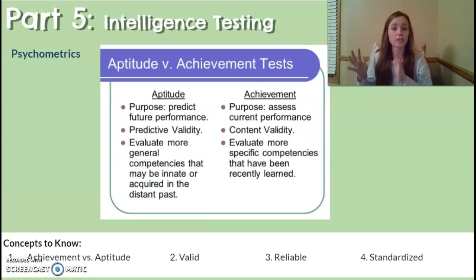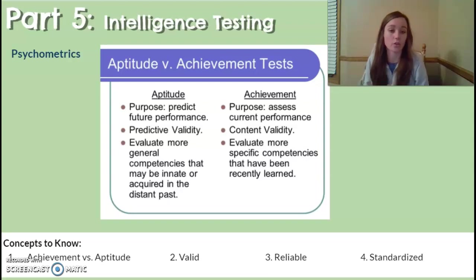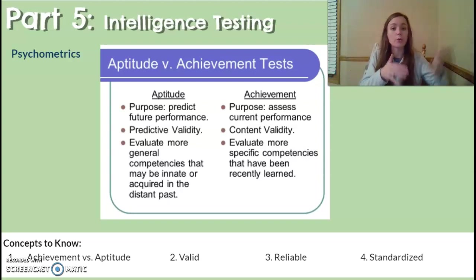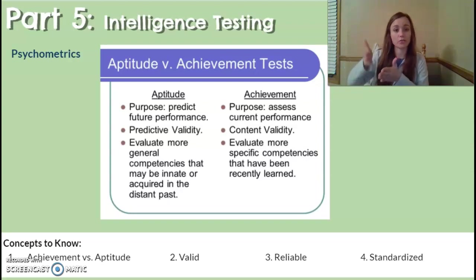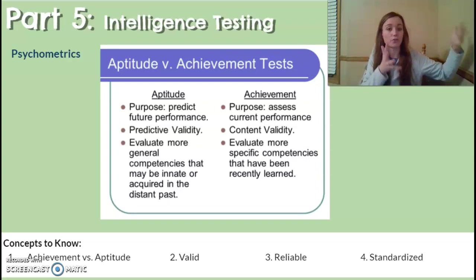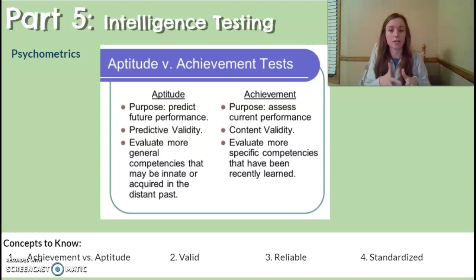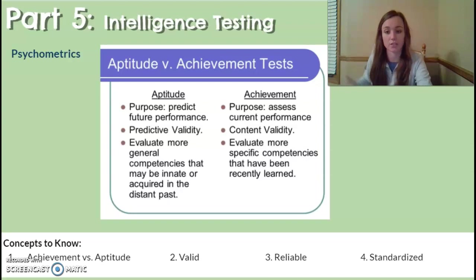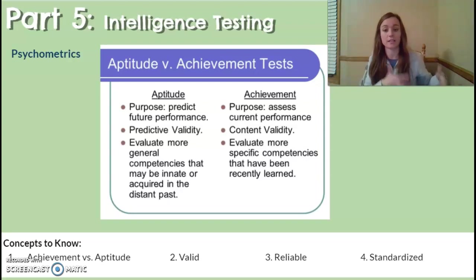Next, let's understand the difference between types of tests. An aptitude test — such as an IQ test — is designed to predict future performance. An achievement test, on the other hand, shows past learning; it's something you do in school demonstrating knowledge of what you've already learned. Aptitude tests focus on the future, trying to predict how well you'll do, such as assessing problem-solving abilities, whereas an achievement test covers past knowledge and information you studied.